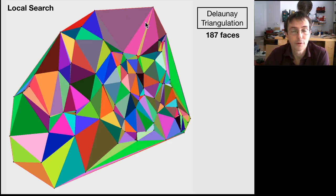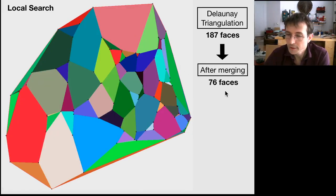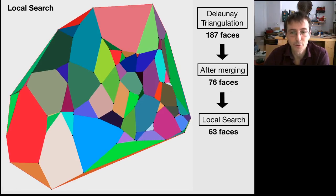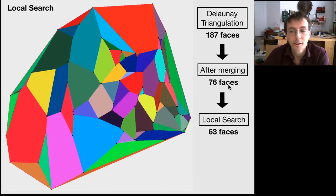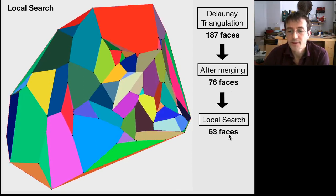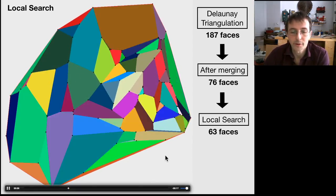If you merge, if you remove the useless edges, you quickly get to 76 faces. And if you apply the local search I was explaining, you will reach a solution of 63 faces. And you can see it running here.